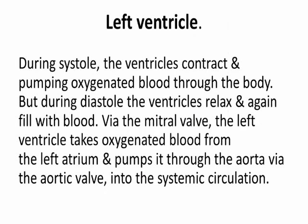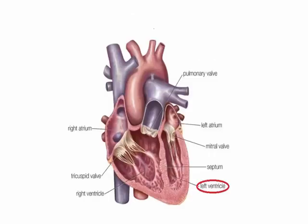Left ventricle. During systole, the ventricles contract and pump oxygenated blood through the body. But during diastole, the ventricles relax and again fill with blood. Via the mitral valve, the left ventricle takes oxygenated blood from the left atrium and pumps it through the aorta via the aortic valve into the systemic circulation.